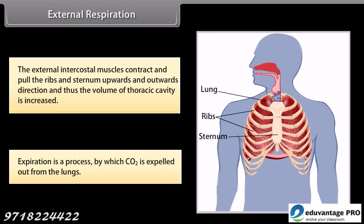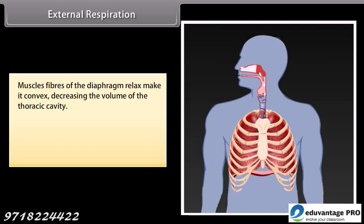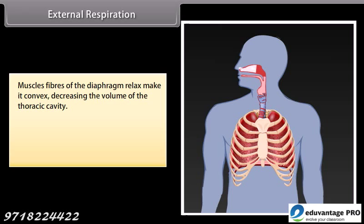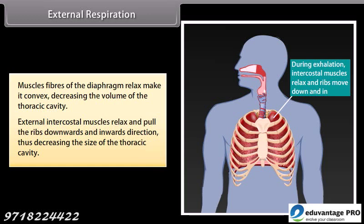Expiration is the process by which CO2 is expelled out from the lungs. The muscle fibers of the diaphragm relax, making it convex and decreasing the volume of the thoracic cavity. The external intercostal muscles relax and pull the ribs downwards and inwards, thus further decreasing the size of the thoracic cavity.